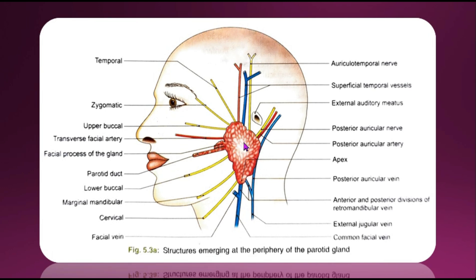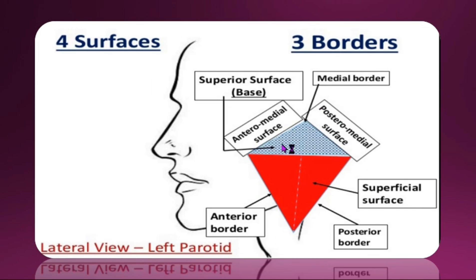Looking at the external features of the parotid gland, this gland resembles a three-sided pyramid, with the apex directed downwards. The gland has four surfaces: superior, superficial, anteromedial, and posteromedial. The superficial surface lies between the anterior and posterior border, the anteromedial surface between the anterior and medial border, and the posteromedial surface between the medial and posterior border.